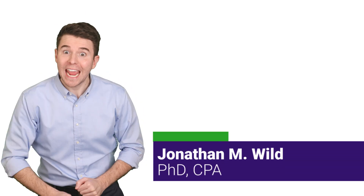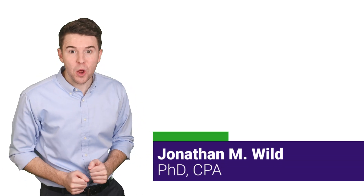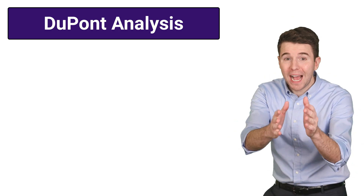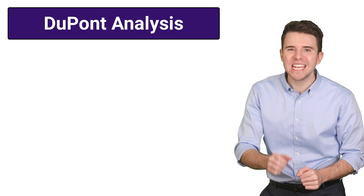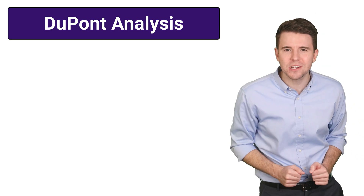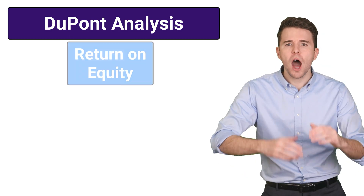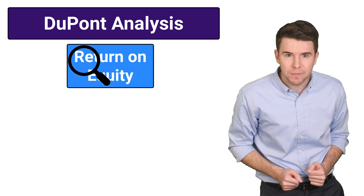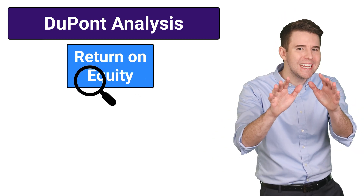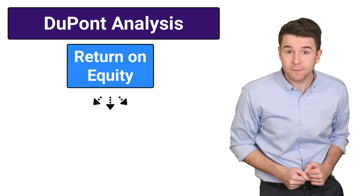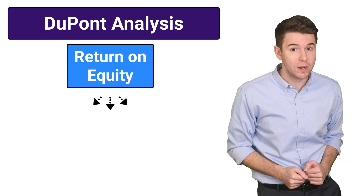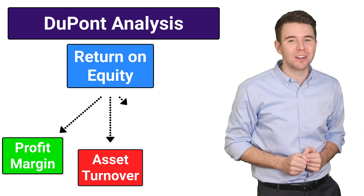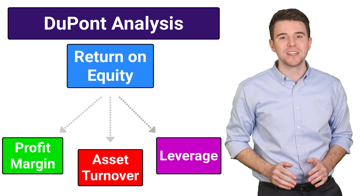Hi, I'm Jonathan Wild, and in this segment we cover DuPont Analysis. DuPont Analysis is used to get a more detailed understanding of what's driving a company's return on equity by breaking down the ratio into three fundamental components: Profit Margin, Asset Turnover, and Leverage.